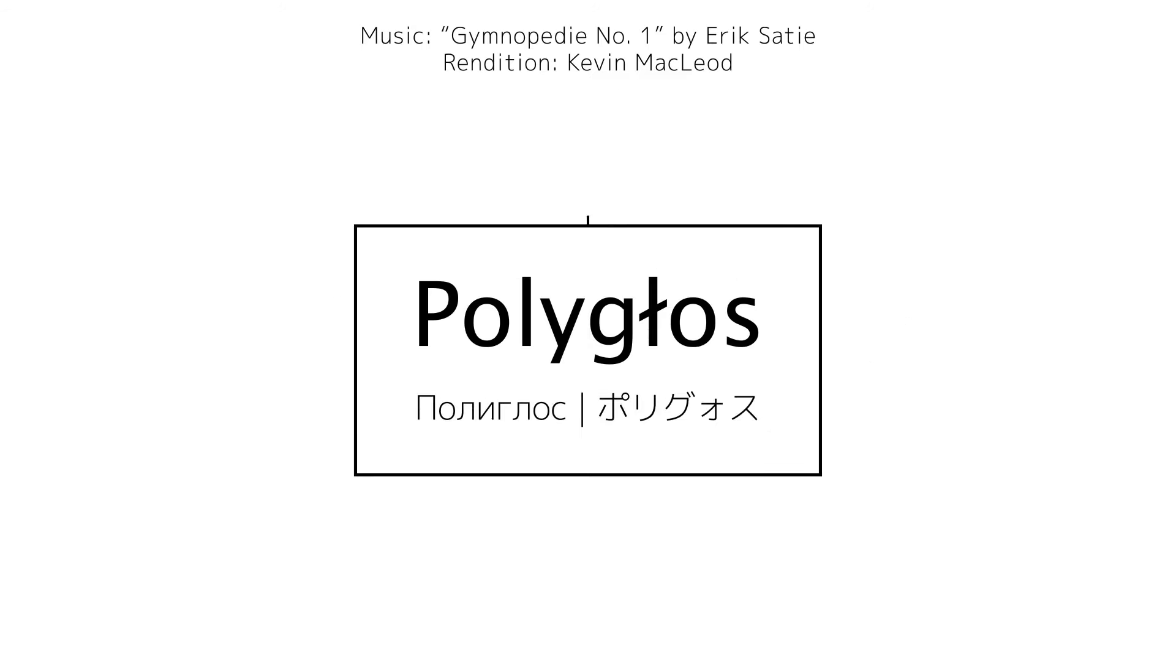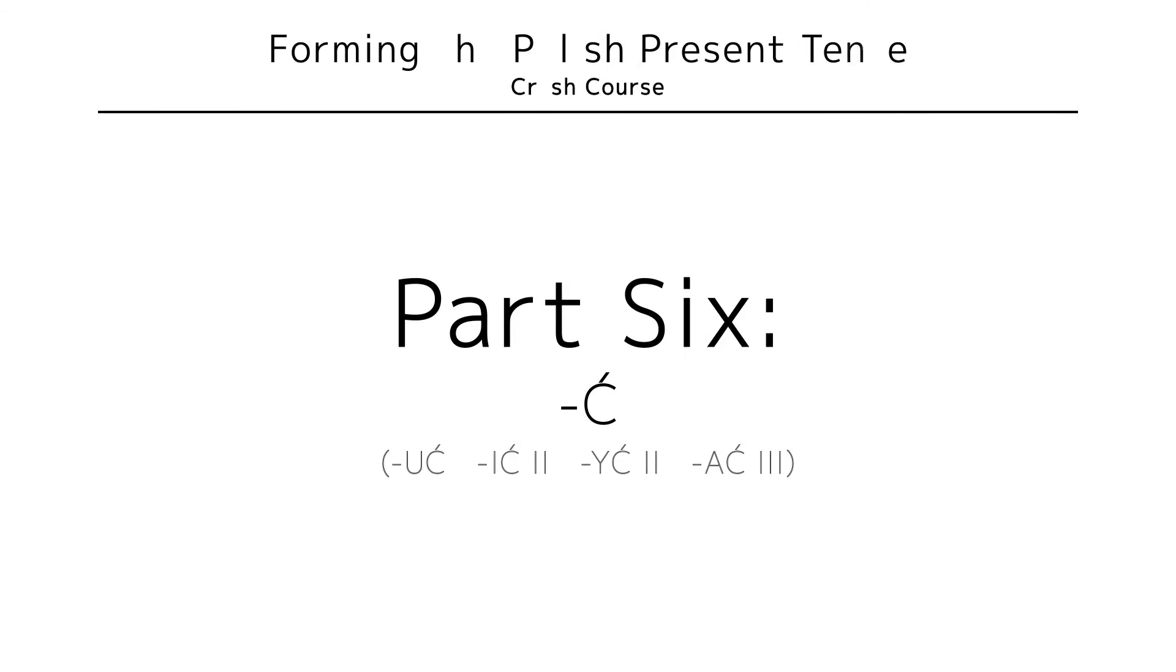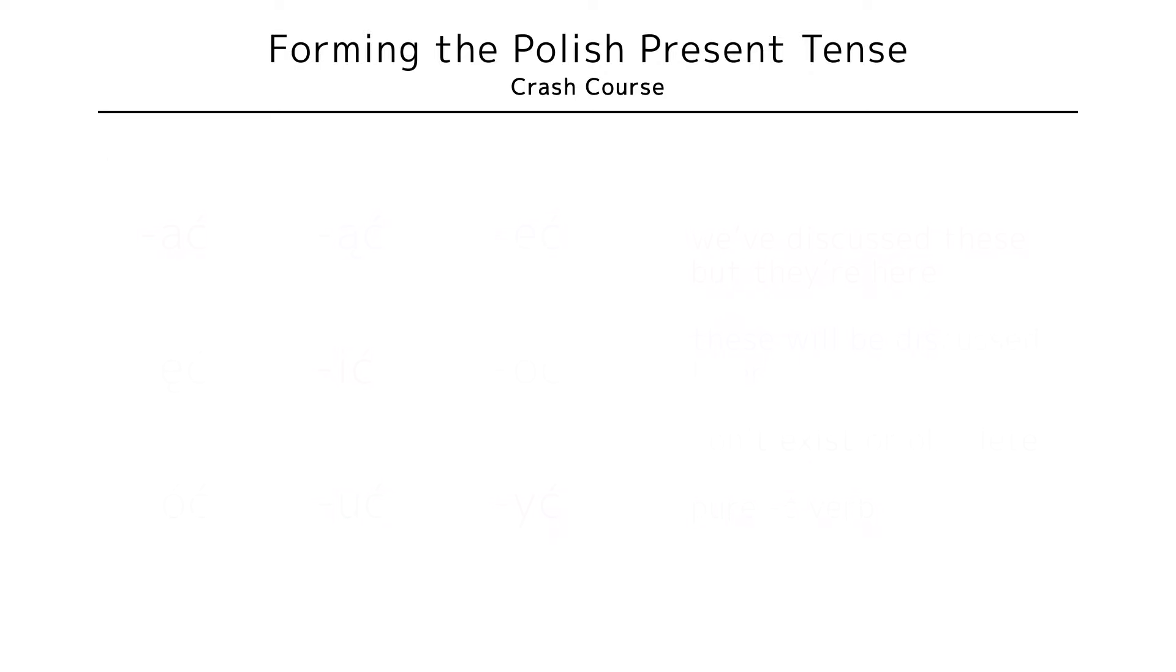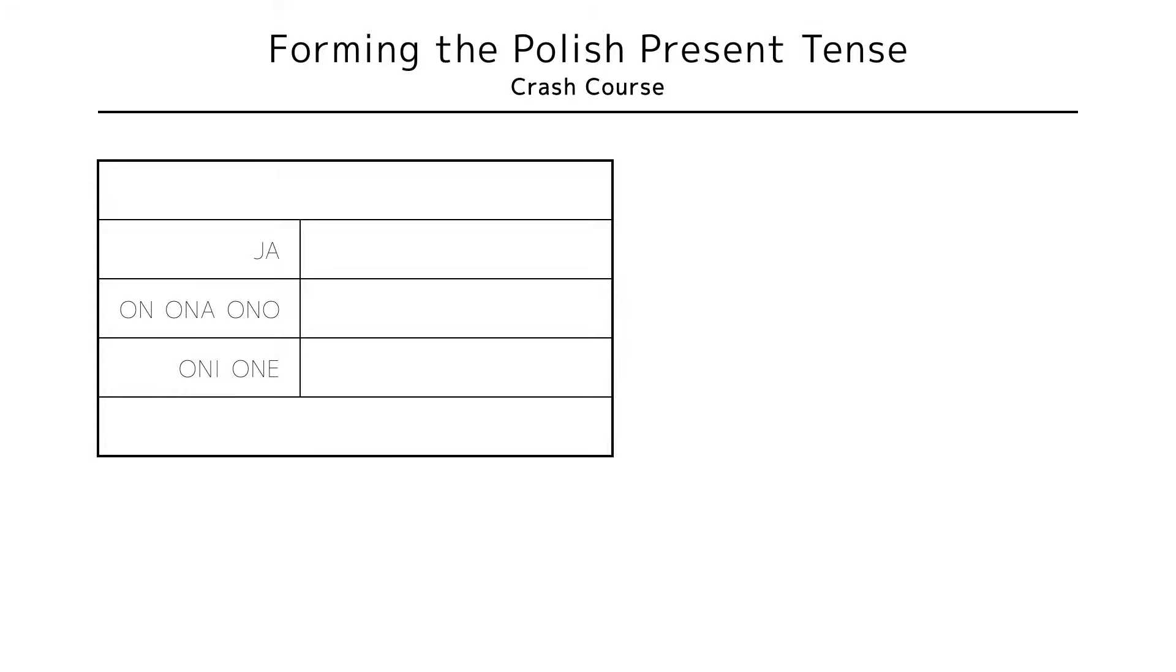Witam ponownie z tej strony PoliGłos and in this video we'll be discussing the present forms of Ć verbs. This applies to verbs that end in a vowel followed by Ć that don't sort into any of the other verb types and they're usually monosyllabic. The pattern for this verb type is the stem vowel followed by JĘ, JĘ and JĄ.